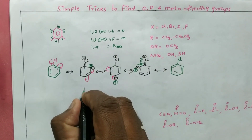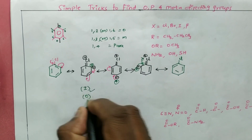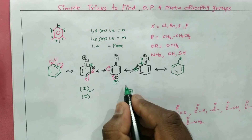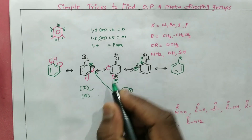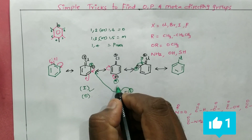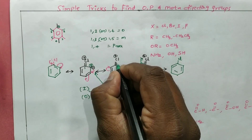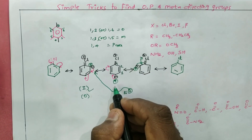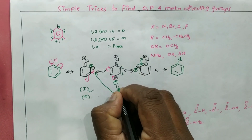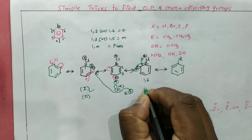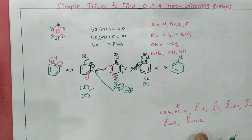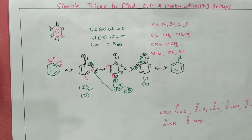From the first resonating structure, the 1,2 position — which is ortho — is electron rich. From the second, the 1,4 position — para — is electron rich. And 1,6 is also ortho. So when an electrophile comes to attack, it will go to these electron-rich ortho and para positions. Both ortho and para positions are electron rich, making Cl an ortho and para director.